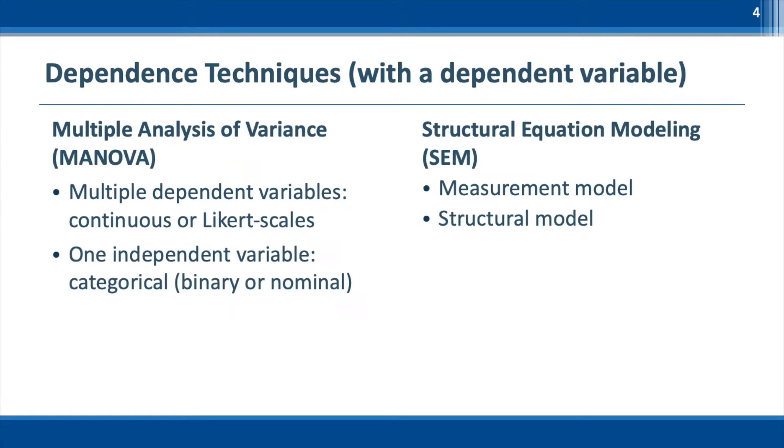If we have a non-metric independent variable and metric dependent variables, ANOVA or MANOVA should be used. These techniques allow us to compare the values of dependent variables across different groups. In this course, I will focus more on MANOVA because ANOVA has been covered in DAV 721.